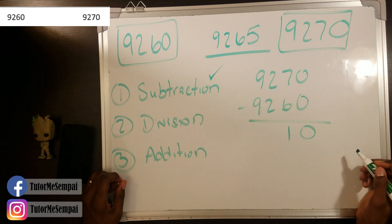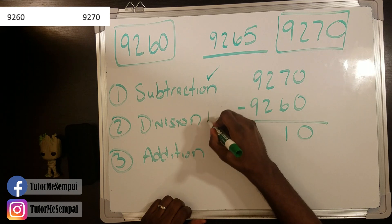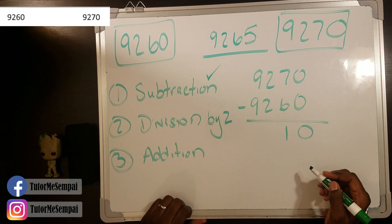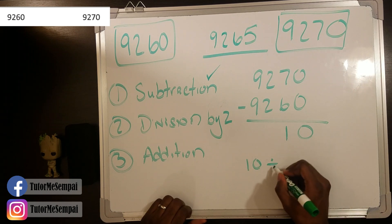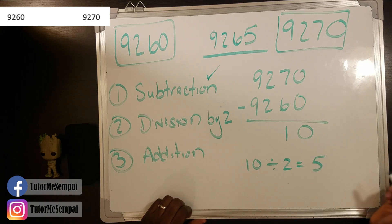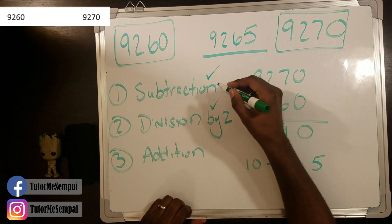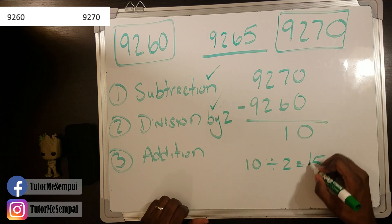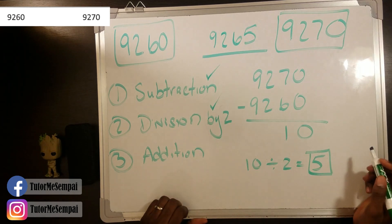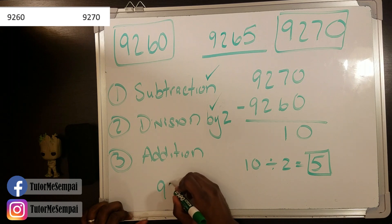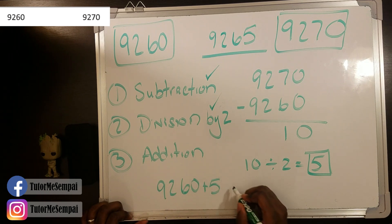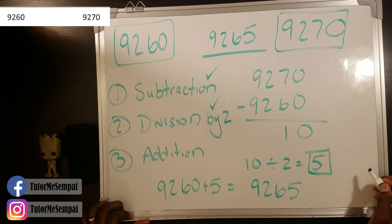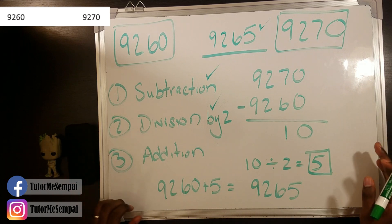Now moving on to the second step, we have division — but the true second step is division by two. So we want to take our answer that we found with our subtraction and divide that by two. What do you get when you divide 10 by two? You get five, right? So now that we've done our second step — dividing by two — we move on to the third step: addition. We're going to take this answer and add it to the first number. So we get 9,260 plus five. And what is 9,260 plus five? 9,265, which is the same answer we got when we wrote everything out. So we know that this is indeed the midpoint.